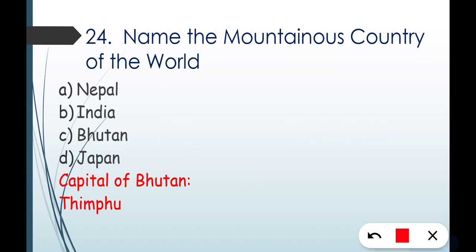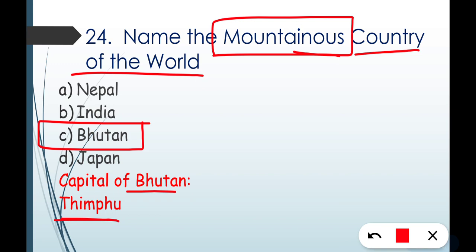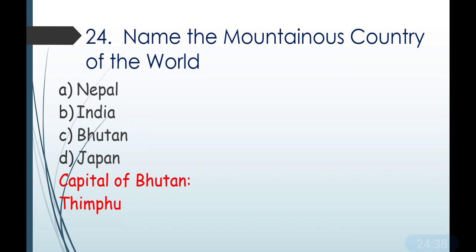Question number twenty-four: name the most mountainous country of the world — meaning which country has the most mountainous terrain. The correct answer is Option C — Bhutan. The capital of Bhutan is Thimphu, and Bhutan is also called the 'Land of Thunderstorm.' This question has also been asked in exams.